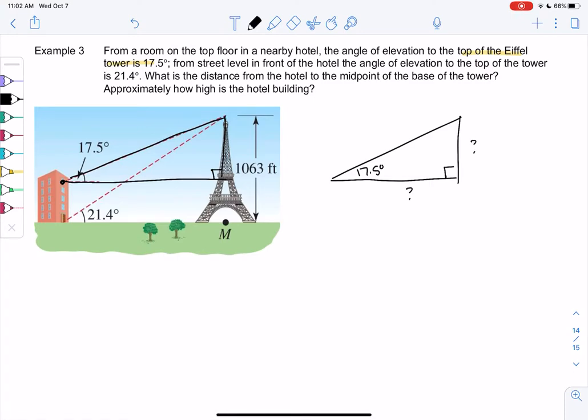And then we also go street level. That would be from the street. The angle of elevation to the Eiffel Tower is 21.4. So we get one more right triangle.